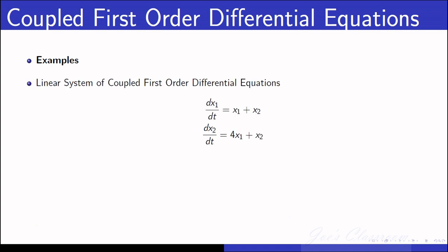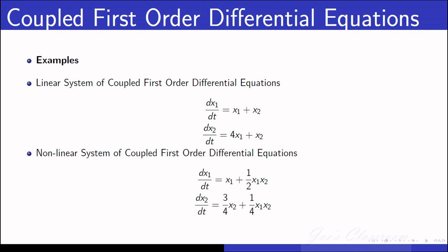Here is a coupled first order differential equation that forms a linear system, because you can write it as a matrix [1, 1; 4, 1] times [x1; x2]. Here is another nonlinear system of coupled first order differential equations - the x1 times x2 term makes this equation nonlinear. These are just some examples to illustrate the concept.